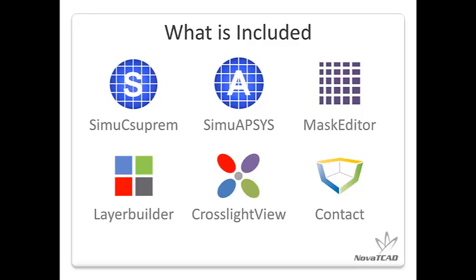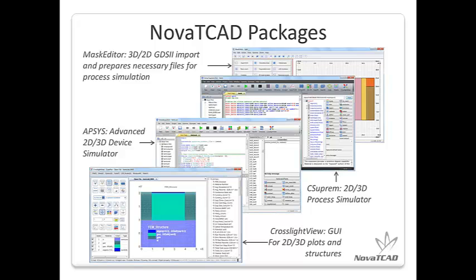Mask Editor is a graphic tool that easily loads GDS2 files or creates the mask layers to be used by the process simulator — a novel way to simplify the 3D simulations. Layer Builder is reserved for creating structures and defining material properties from scratch for device simulations. CrossLite View is a plotting tool that can visualize the meshed structures and plots the IV curves. Contact is used for designing contacts for device simulations.